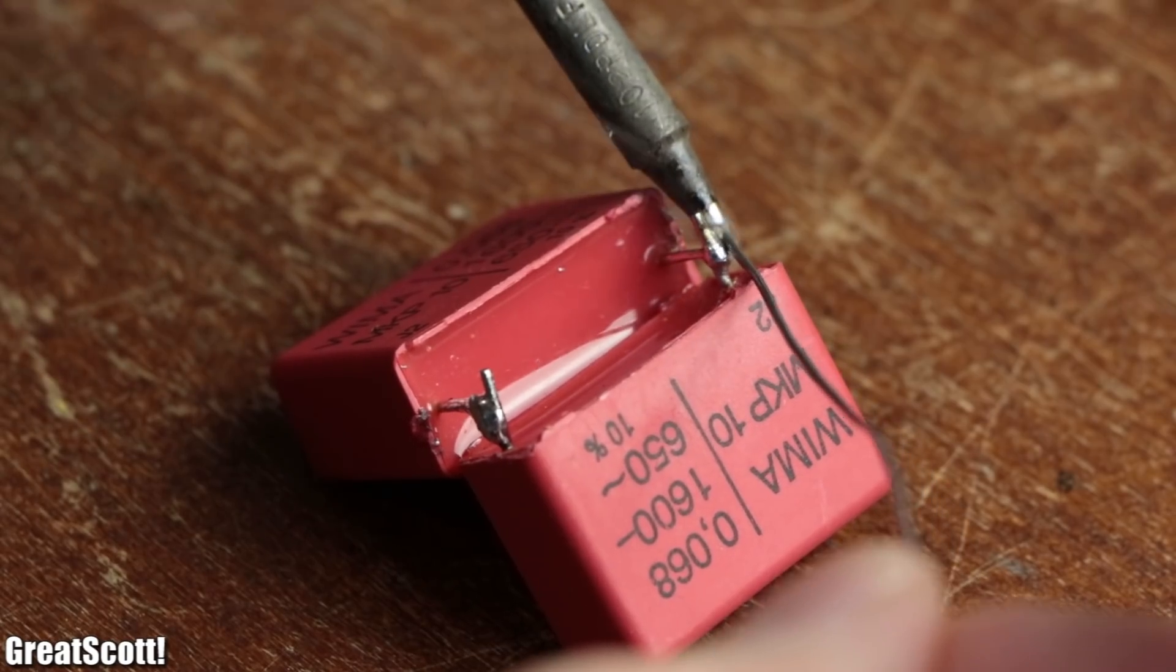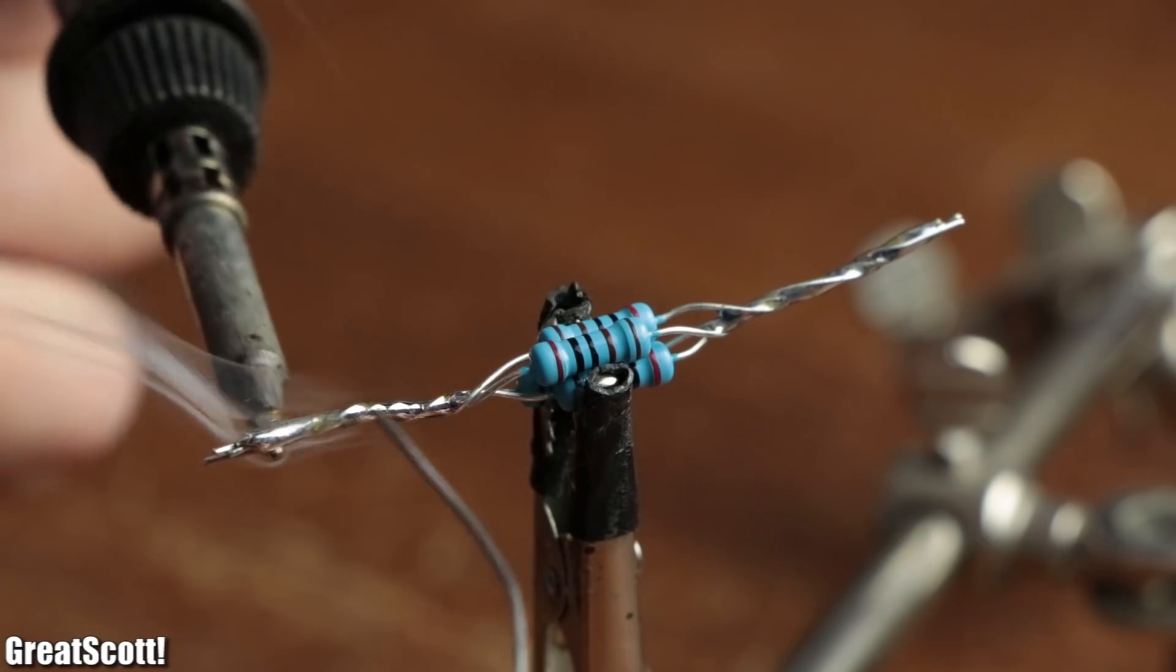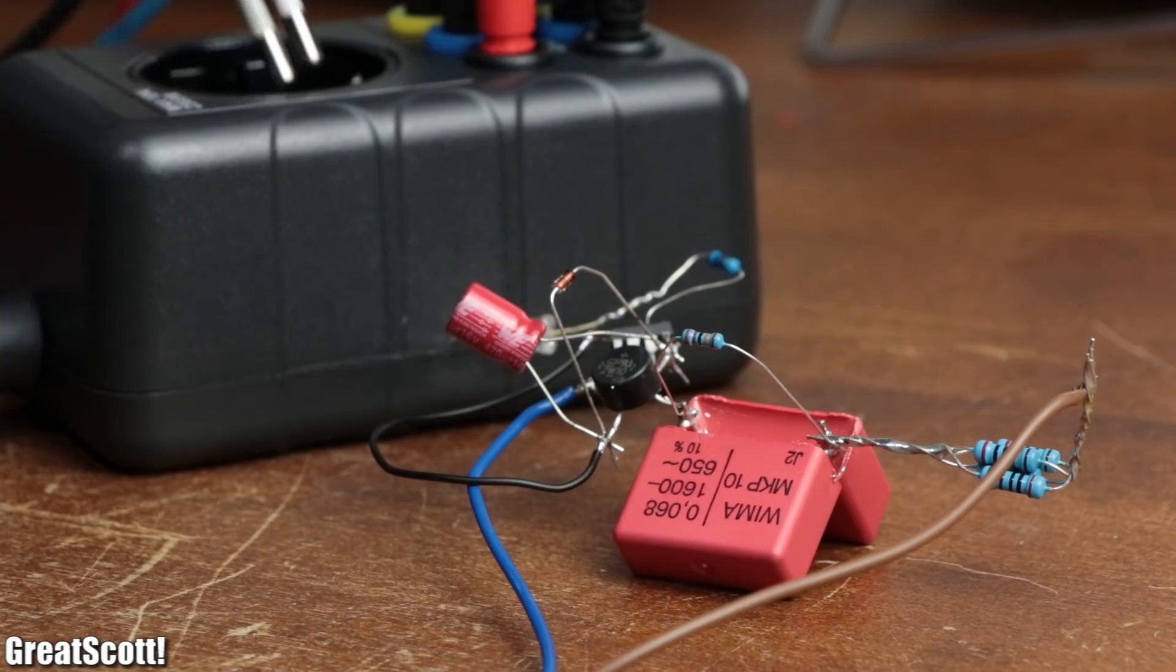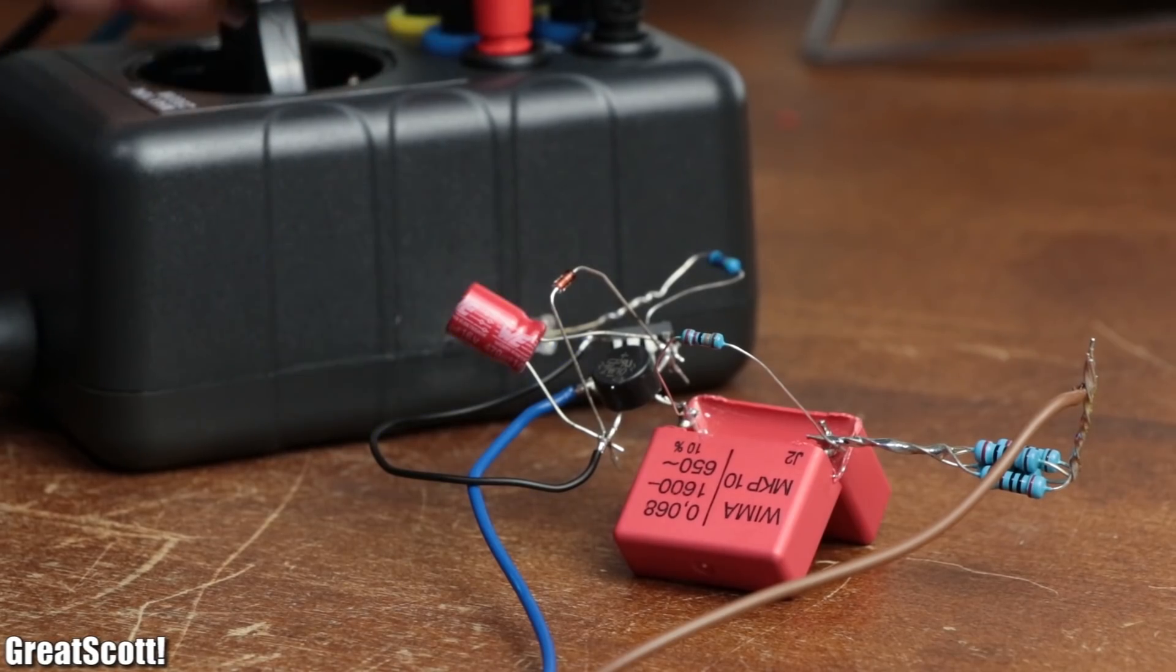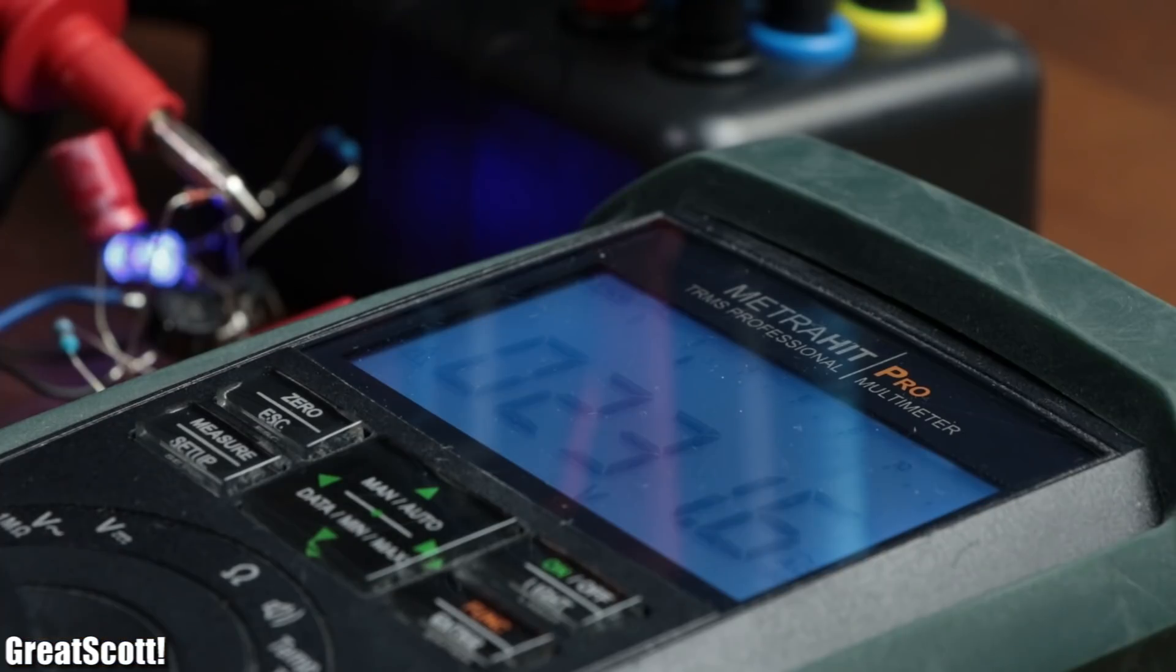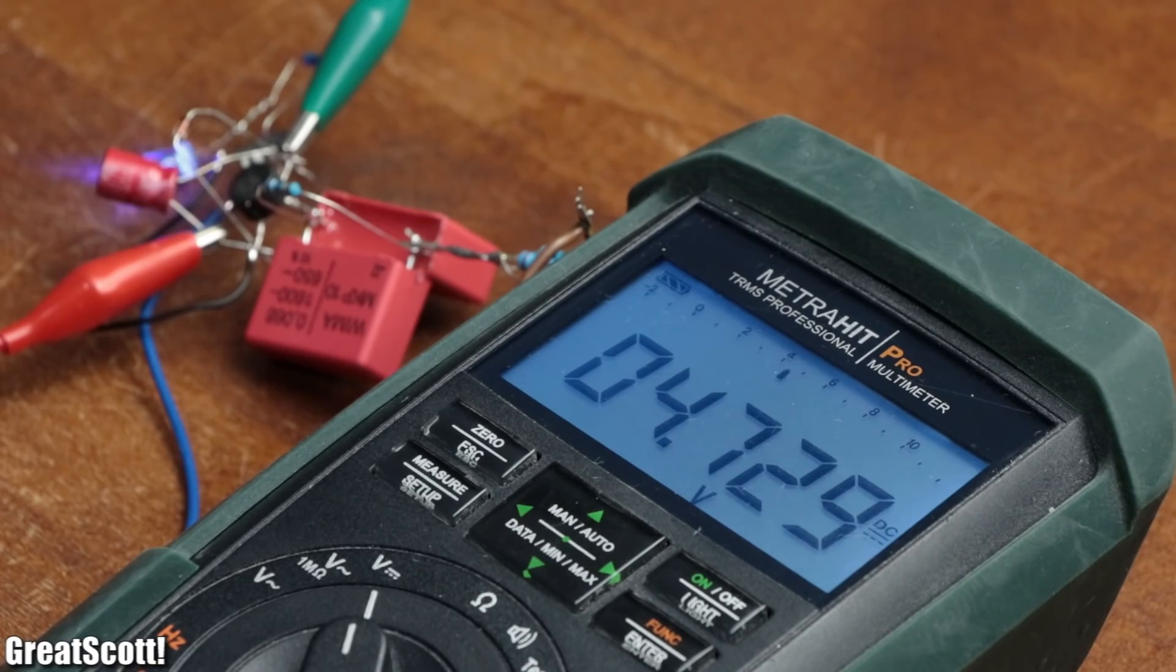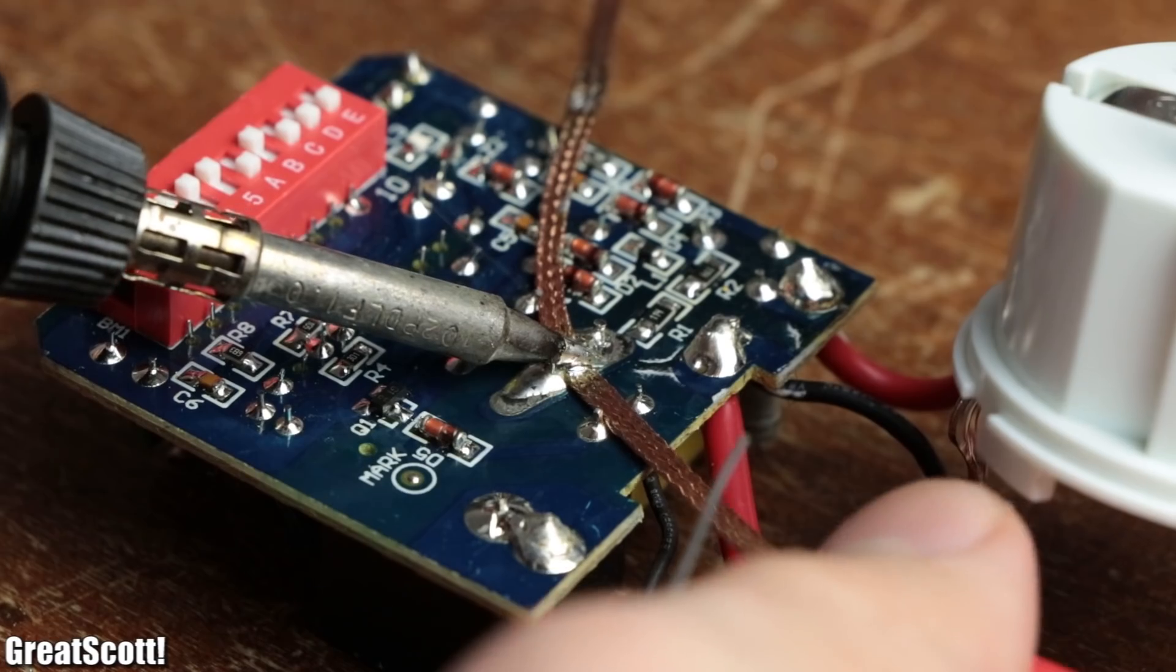So in this video we will have a closer look at a capacitive dropper circuit, which is a low cost, low component count, transformerless mains power supply. It's certainly a lot more dangerous to work with but also gets the job done without a problem. Let's get started.